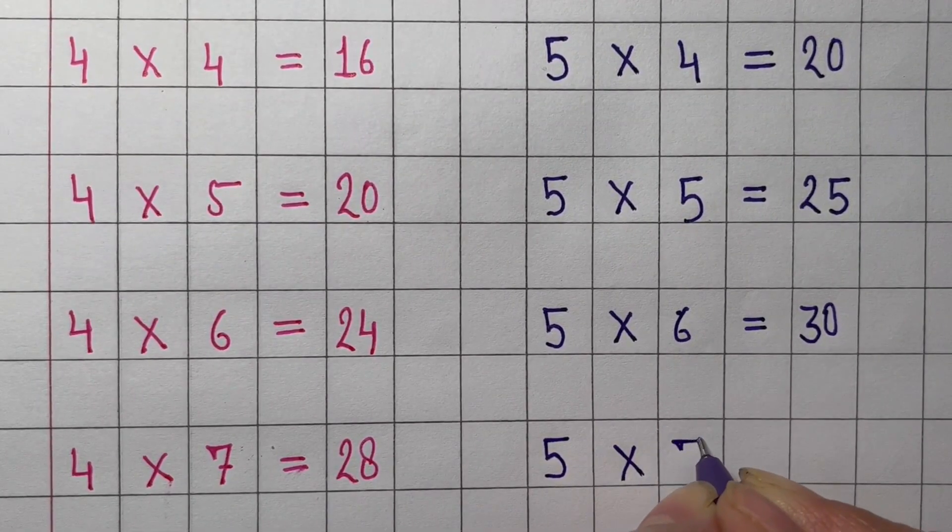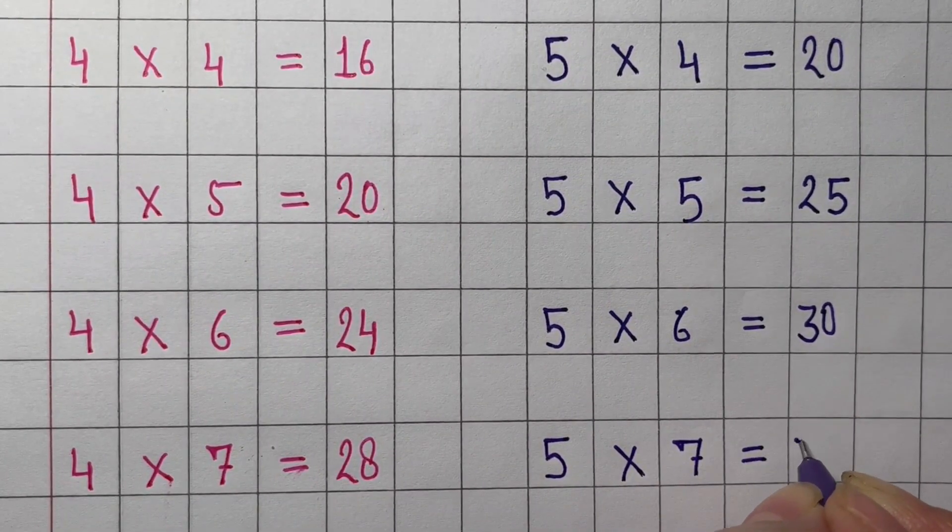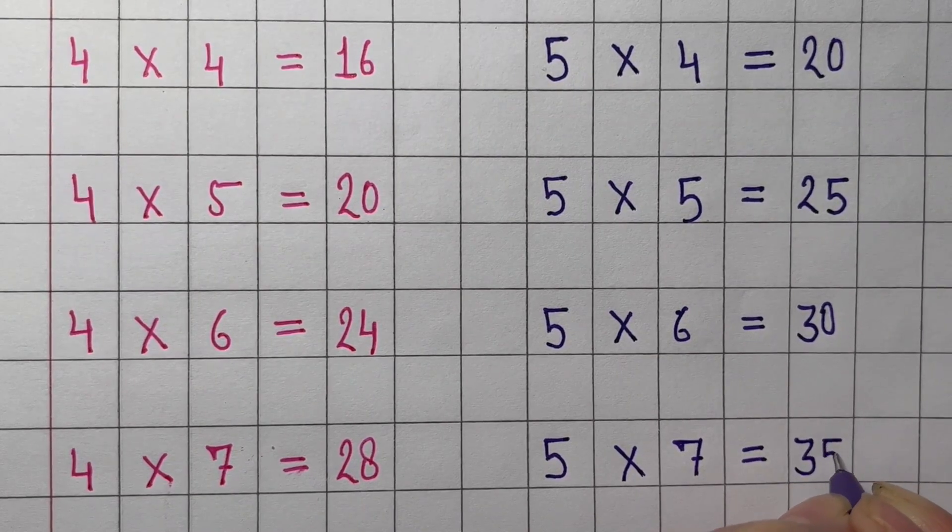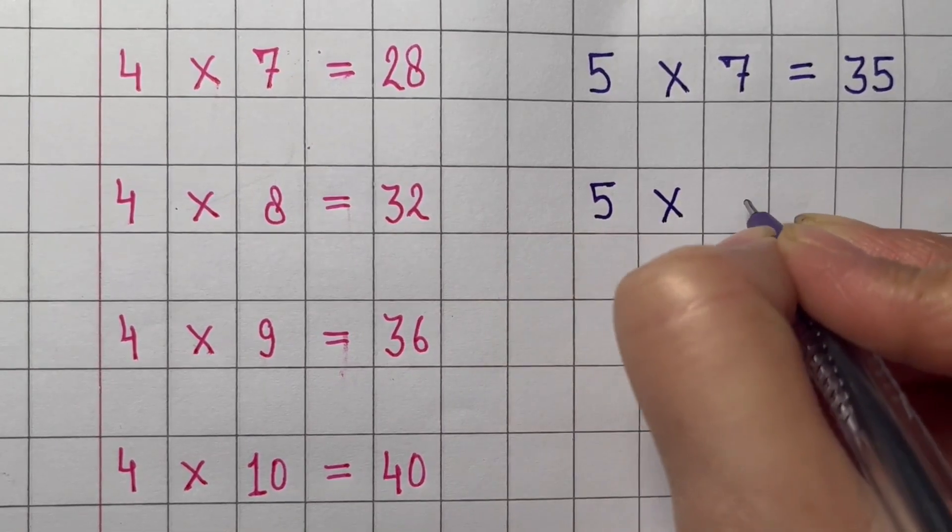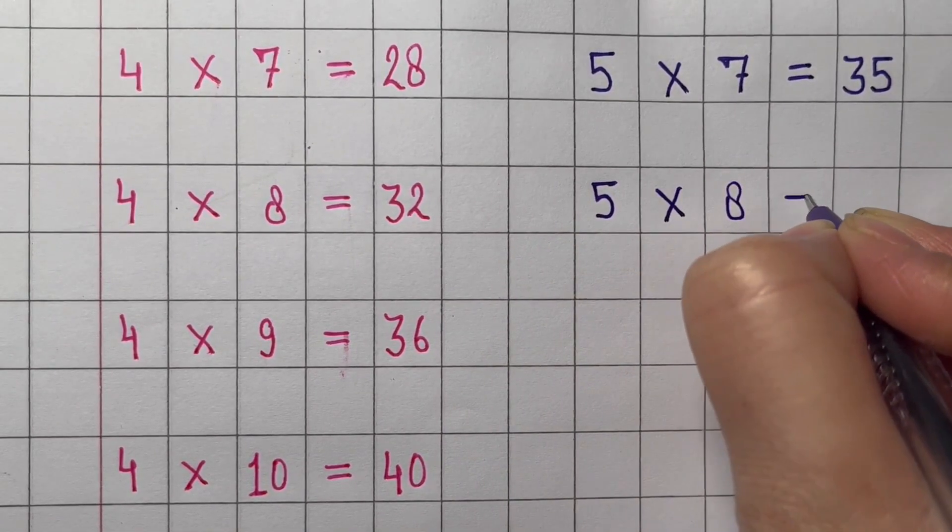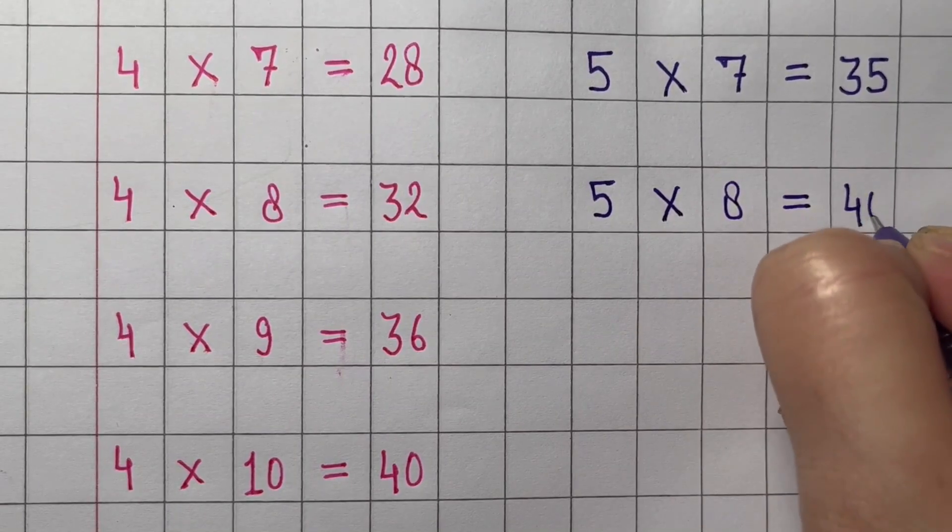Six times 5 equals 30. Seven times 5 equals 35. Eight times 5 equals 40.